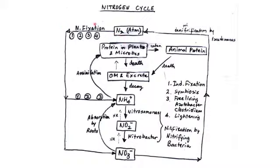The nitrogen cycle doesn't end there. Nitrate, being in a soluble form, can be easily absorbed by the roots of plants. Inside the plant, nitrate has no direct use, so it is converted into ammonia. Multiple enzymes are involved in this conversion. This ammonia is then converted into amino acids and proteins, which are used by the plant for growth and development.